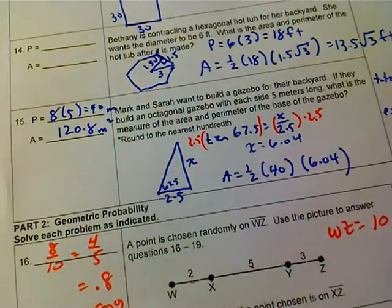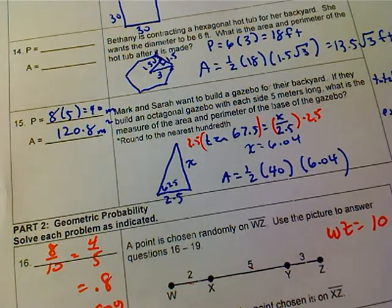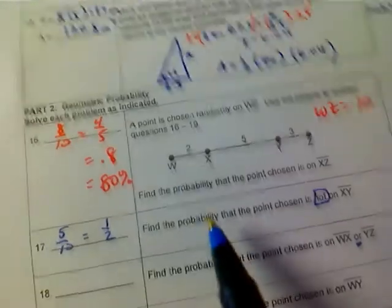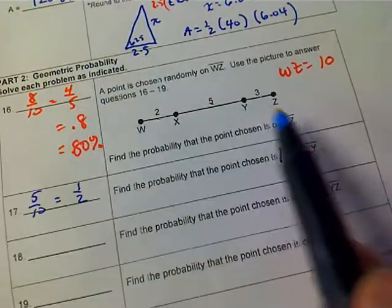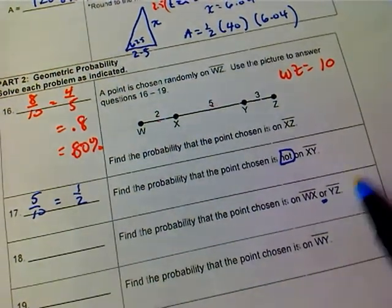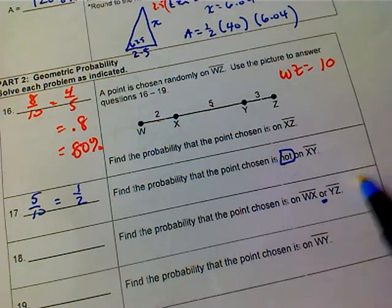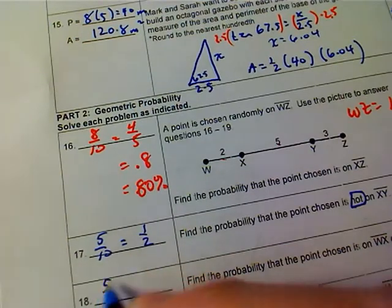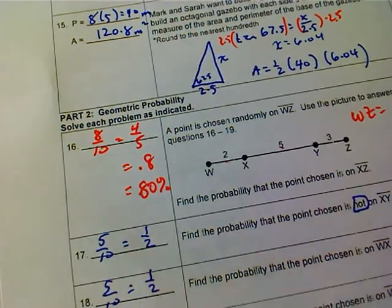All right, what's the probability it's on WX or YZ? Well, WX is 2 and YZ is 3. So that's actually going to be the same thing. This is actually the same problem worded differently. This is going to be 5 tenths, which is 1 half.